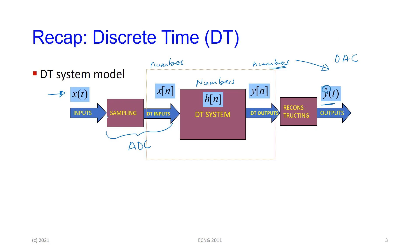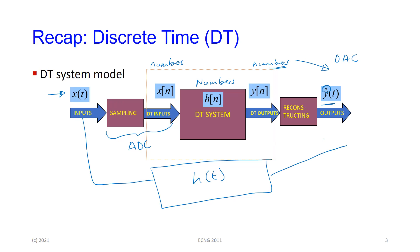We have a little hat here to show that the real system — whatever might have been the original h(t) — if you put x(t) into it, what you'd get would have been y(t). What we have here is an approximation to this, which is why we put a little circumflex or hat over it. That indicates that it isn't the same thing, but if we are very careful and don't make any mistakes, the difference between this and this is going to be minuscule — it doesn't really affect what we're trying to do.